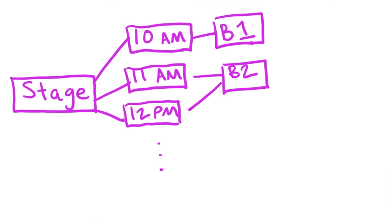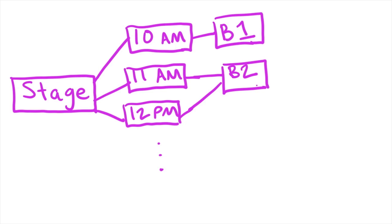This is definitely getting more complicated as a data model — this is clearly not how we would represent something in Salesforce. Instead of having a one-to-many relationship, we have a many-to-many relationship, where a stage can have many bands, but bands can be playing at multiple stages at many times. We're no longer just tracking what stage the bands are playing at, but what time they're playing at those stages, because now there's another unique classification.